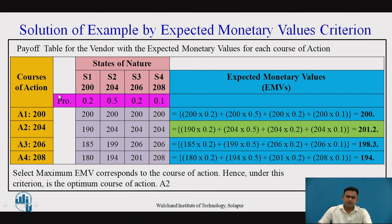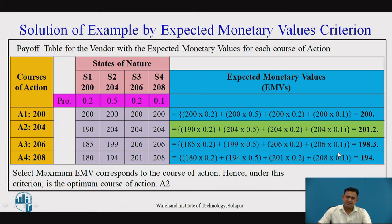According to the rule, since this is a profit payoff table, we select the maximum expected monetary value. The maximum profit is obtained for course of action A2. Hence, under this criteria the optimum course of action is A2 — we should purchase 204 newspapers to get the maximum benefit.